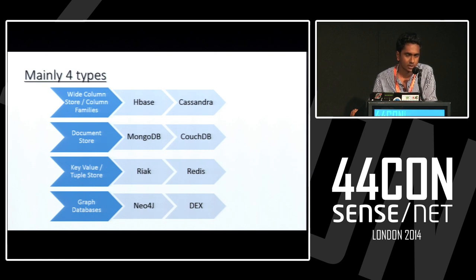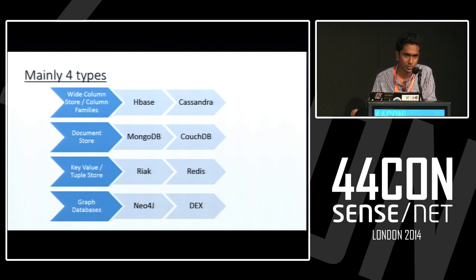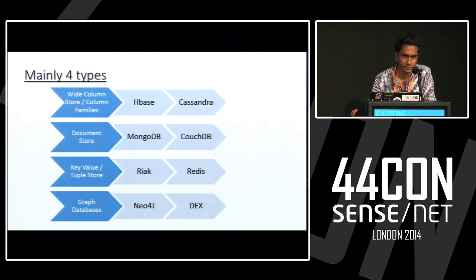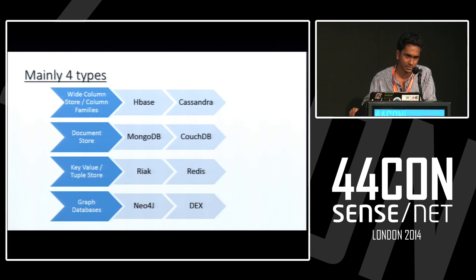What are the main four types of NoSQL databases? There are wide-column store databases — HBase and Cassandra are examples of those. You have document store databases — MongoDB and CouchDB come under those. You have key-value or tuple store databases — Riak and Redis are examples. And you have graph databases — Neo4j and Dex. These are some of the famous databases I've taken upon, and we'll have a look at all of them.